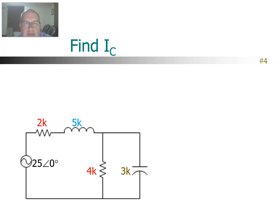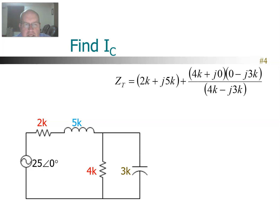Here's another one. This time we want to find the current in the capacitor — not the total current, but the current in the capacitor. But we're going to start off the same way by finding the total current, so let's do that by finding the total Z of the circuit. Total Z is the 2K and a 5K inductor in series, so it's 2K + j5K. And then in parallel we have the 4K resistor and the 3K capacitor: (4K + j0)(0 − j3K) divided by (4K − j3K).